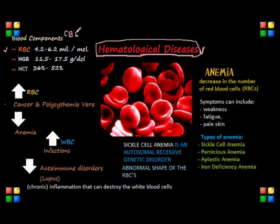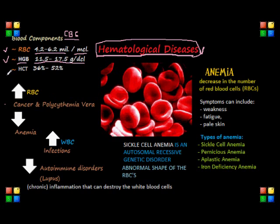Now, these are the values that we need to know. For RBCs, our red blood cells, the normal range is 4.2 to 6.2 millions of cells per microliter. For our hemoglobin, the range is 11.5 to 17.5 grams per deciliter. And for the hematocrit, the normal values would be between 36 and 52%. So again, it's very important to know our blood values by heart for the NCLEX.